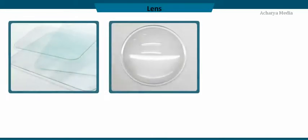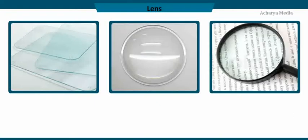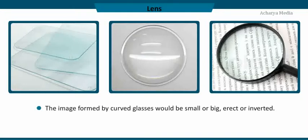You must have seen different types of glasses, such as plain glasses or curved glasses. Have you seen objects through glasses? You will be amazed to know that the images formed by the curved glasses would be small or big or inverted, and it depends on the nature of the curve. A piece of curved glass is called a lens. Let us discuss the refraction through lenses.